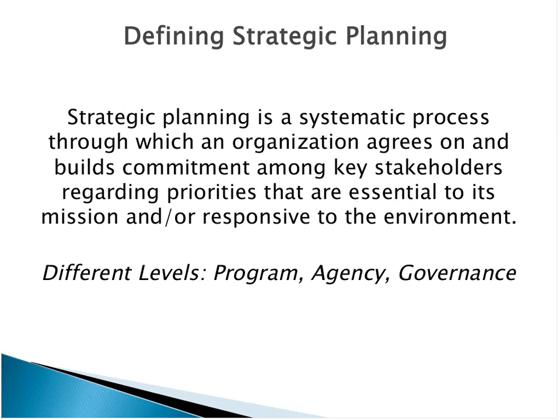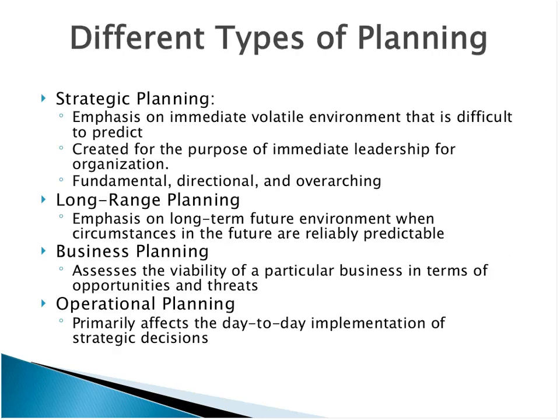Defining strategic planning: it's a systematic process, very straightforward, focused on either a key question or a group of questions involving either a program or an organization. Strategic planning can occur at a program, agency, or governance level, depending on whether you're focusing on a program or an entire agency. There are different types of planning to understand.